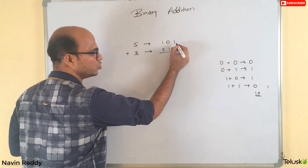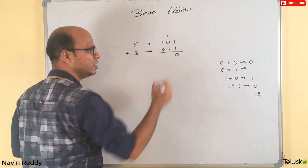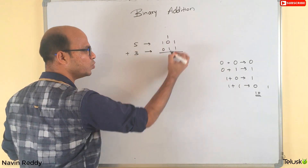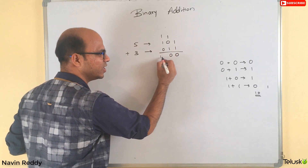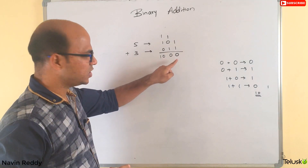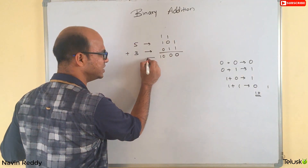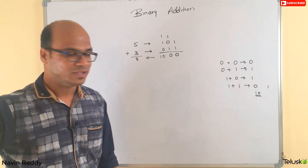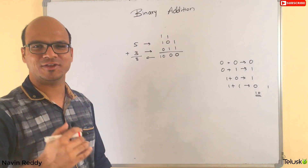Now let's add five (one zero one) and three (zero one one). Starting from the right: one plus one gives zero with carry one. Moving left: one plus one again gives zero with carry one. Then one plus zero plus the carry one gives one zero. So the final result is one zero zero zero, which equals eight. And five plus three is indeed eight — that's how you add two binary numbers.